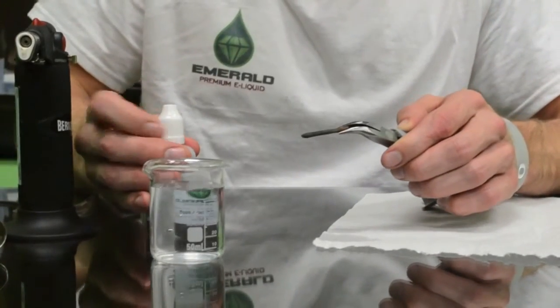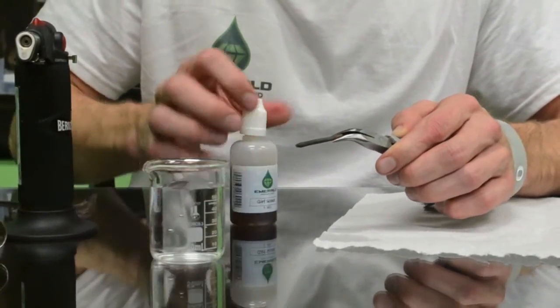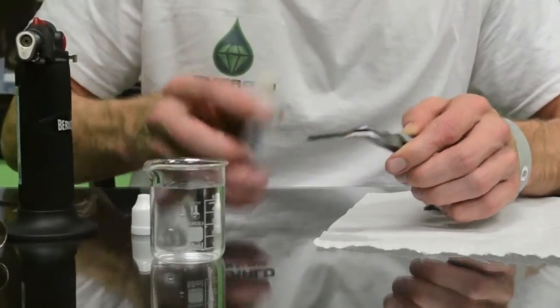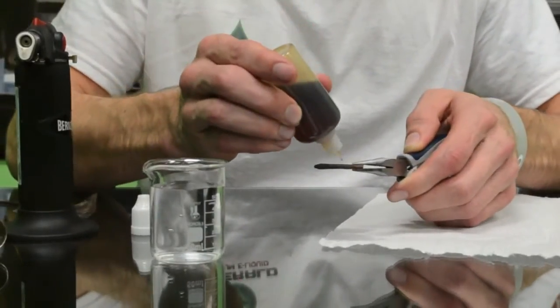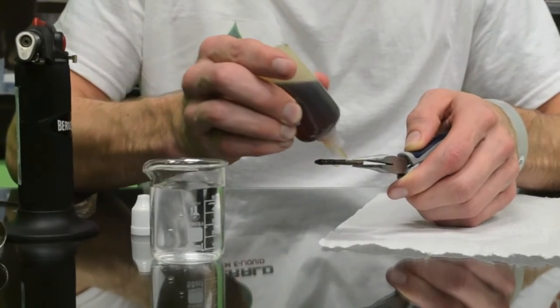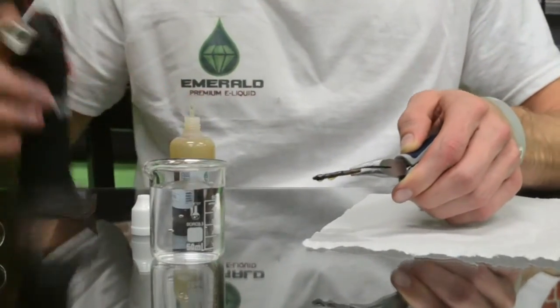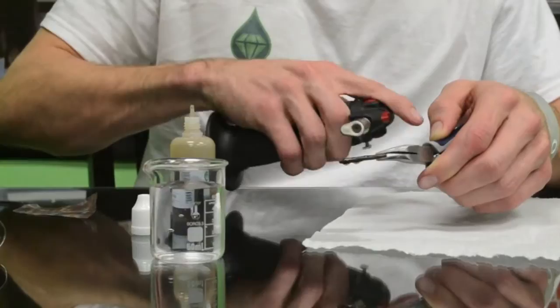Once you torch it a couple times, the next step is to season it with your liquid. Get it completely soaked with your liquid and then light it on fire.